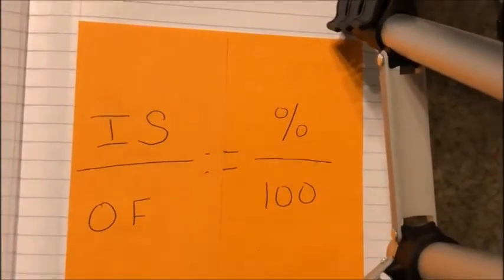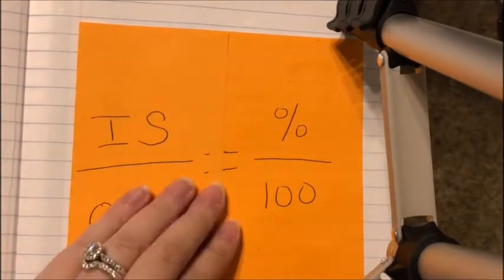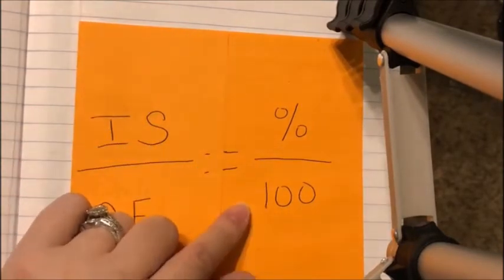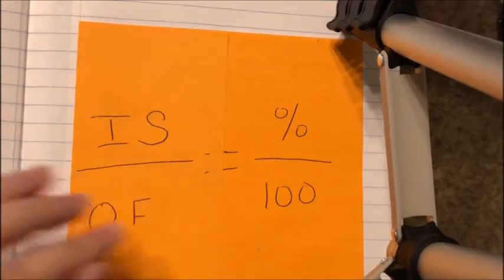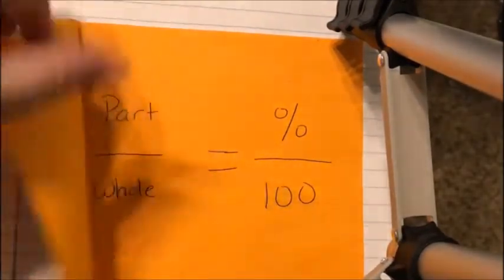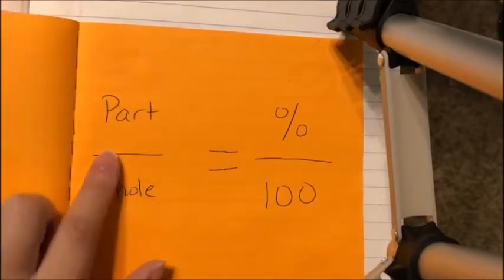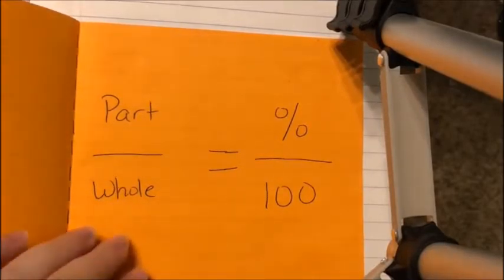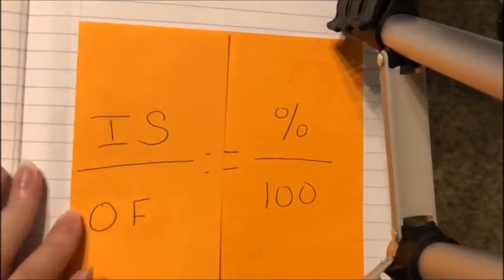On page thirty-five you have an orange paper that shows how to set up a percent proportion. It reads: 'is over of equals percent over a hundred.' Percents are always over a hundred every time, even if the percent is bigger than a hundred or less than one. Opening the flap shows part over whole — that's what the proportion you've been looking at looks like.